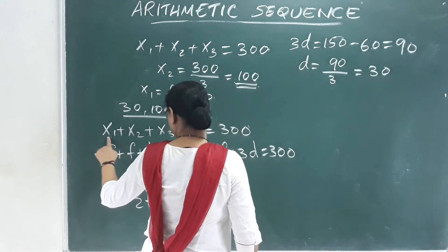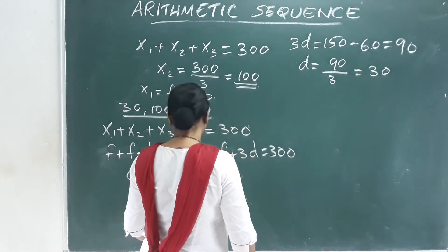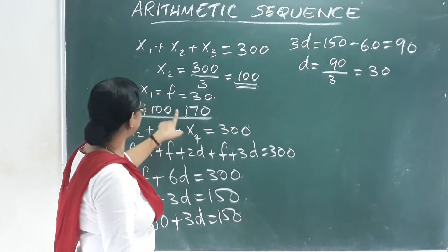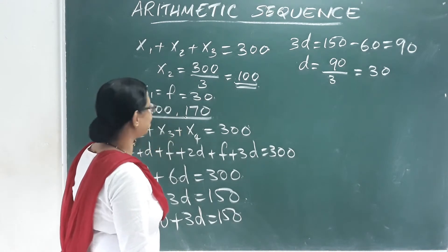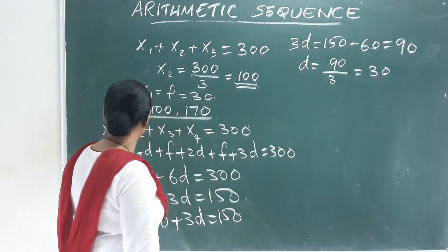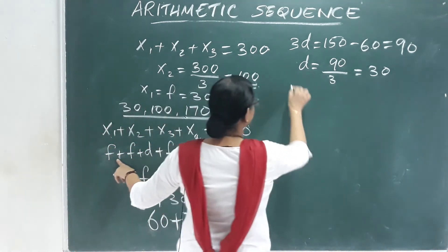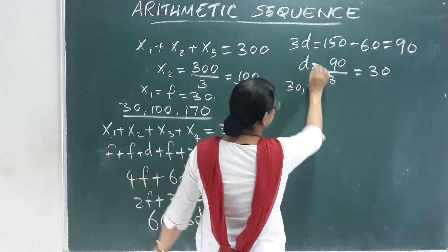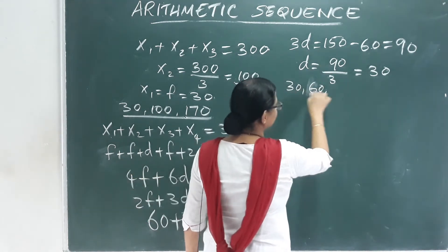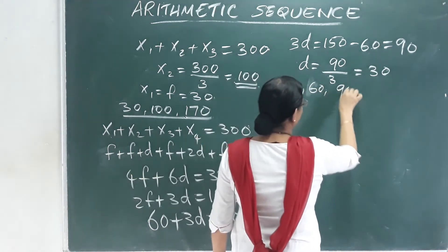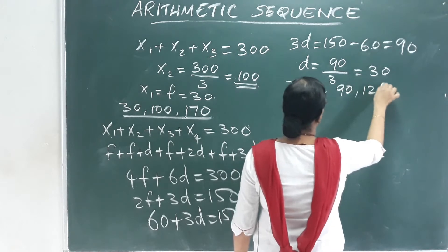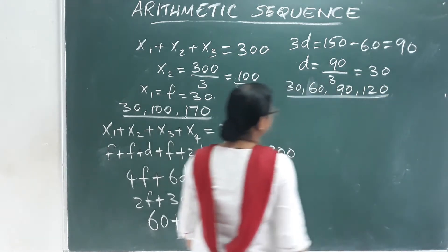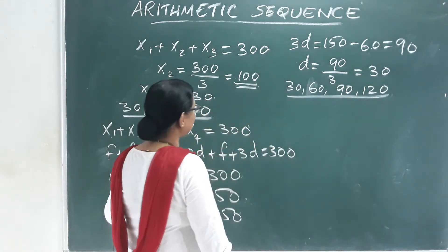So for four terms the common difference is 30. The first term is 30, second term is 60, third is 90, fourth is 120.